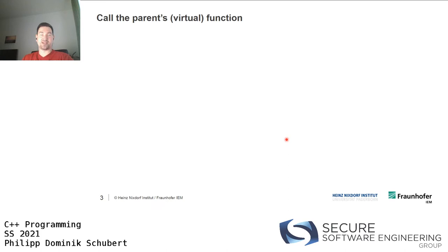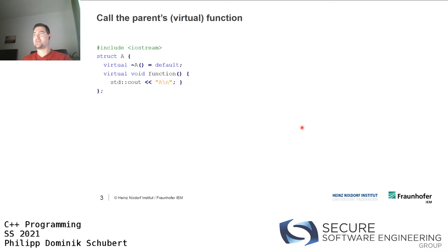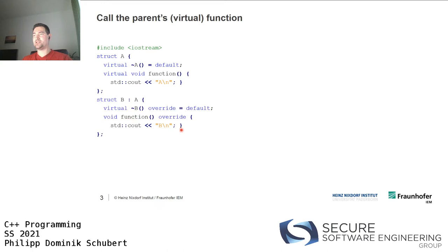It's also possible to call the parent's function or even the parent's virtual function explicitly. Say you have some variable of some concrete type that specializes a draw function, for instance. You can call that, but you can also call explicitly the draw function of your parent if you need that — if your specialization at some point is not desired. We have a struct A with some virtual function which prints the type's name; struct B specializes it to print B; and struct C also specializes it to print C.